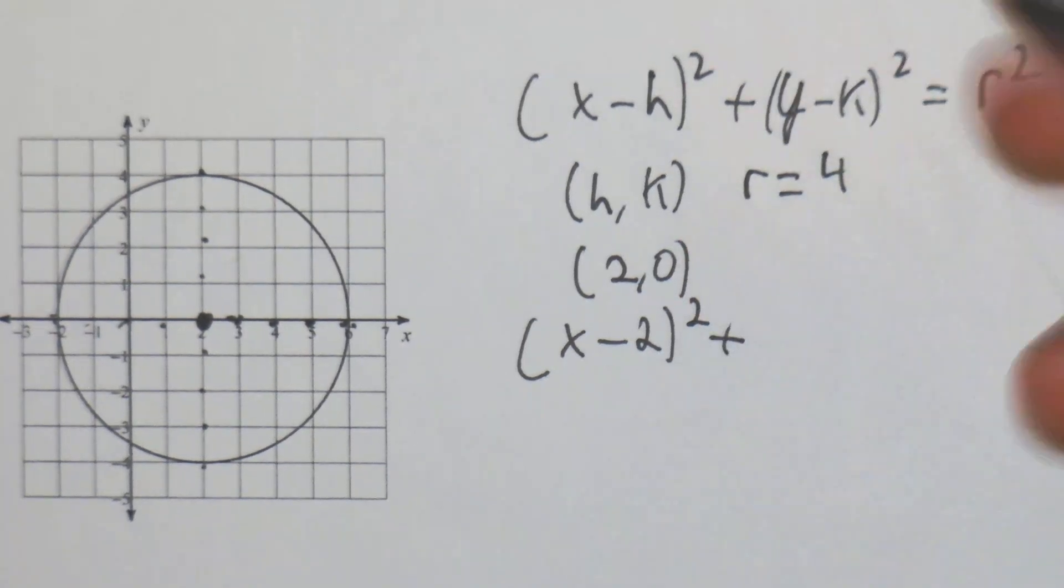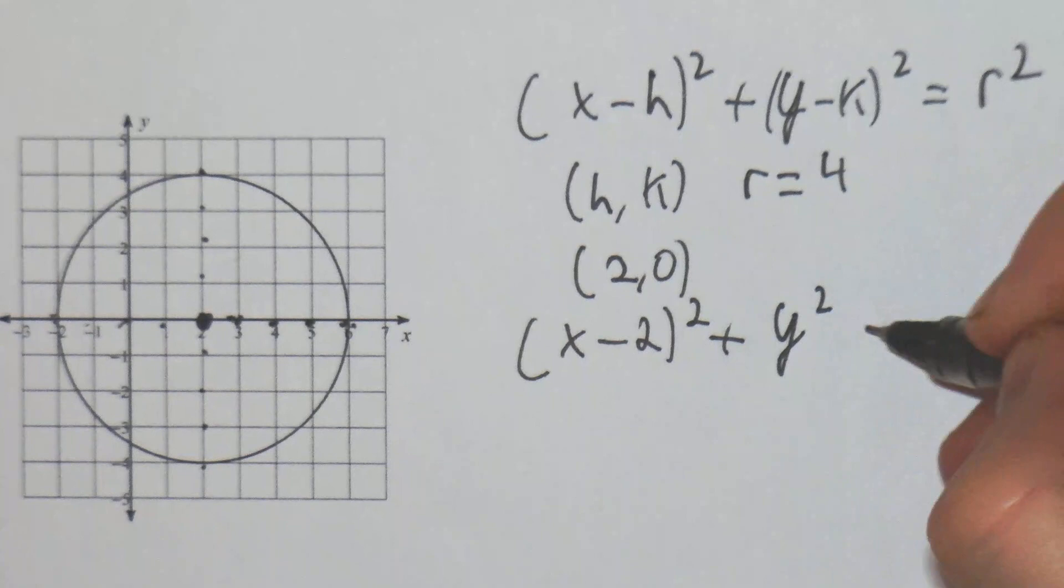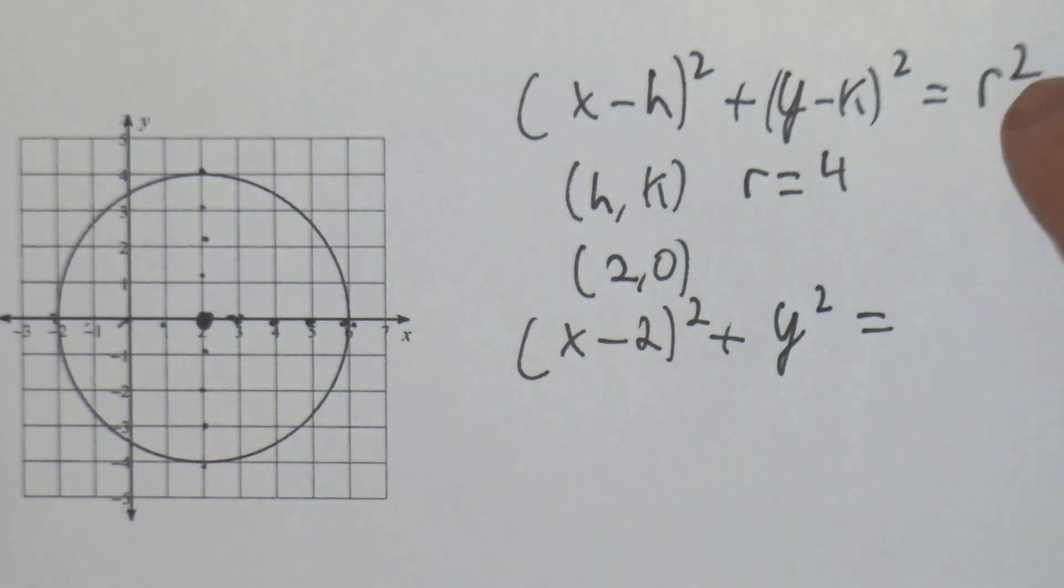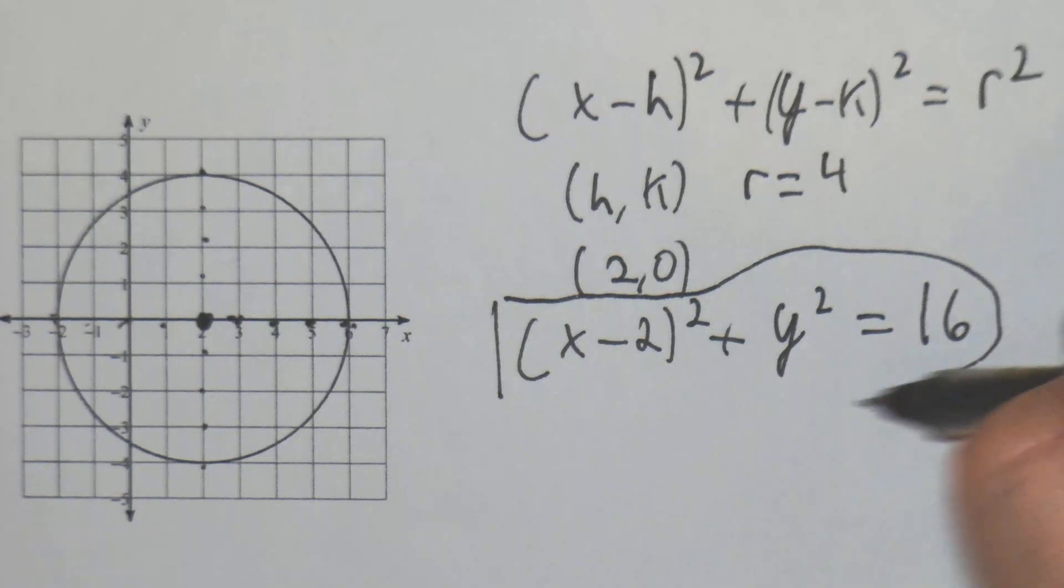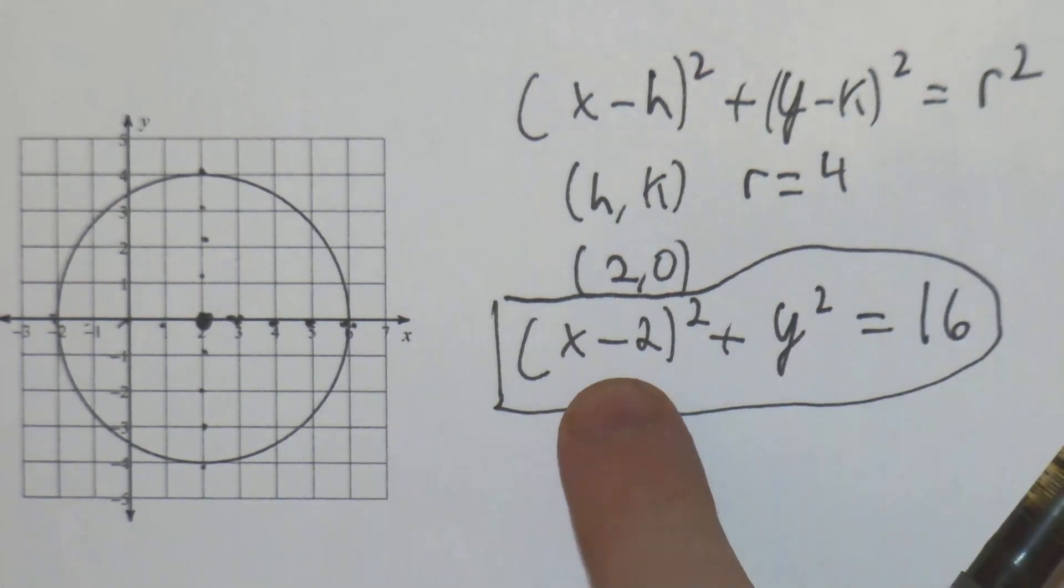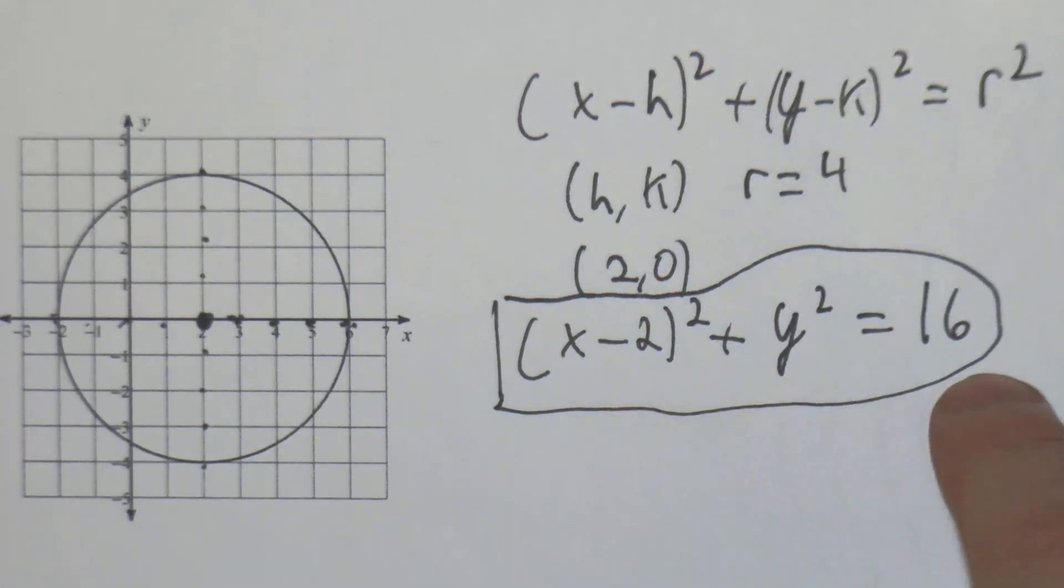4 times 4 is going to give us 16. So our formula to represent this circle is (x - 2)² + y² = 16.